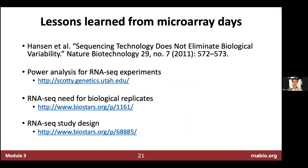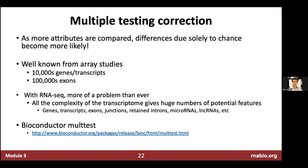Remember basic lessons from the days of microarrays: multiple testing is critical. With microarrays we had ~30,000 genes to test; now with total RNA experiments you might have hundreds of thousands of features — lncRNAs, exons, exon-exon junctions — meaning hundreds of thousands or millions of statistical tests. Most methods we'll introduce have multiple testing correction approaches built in.